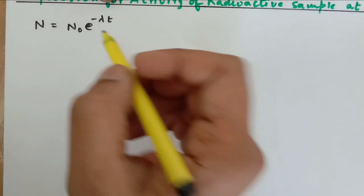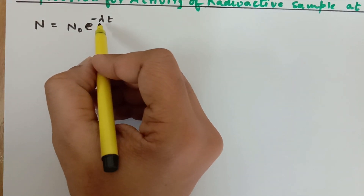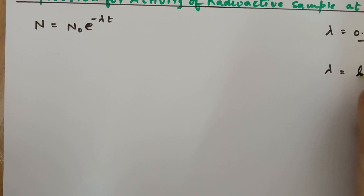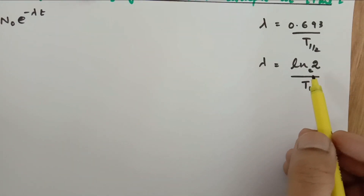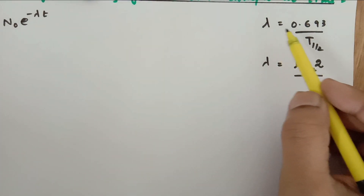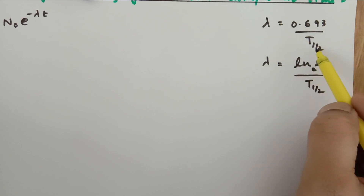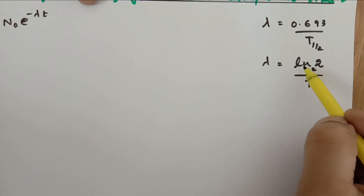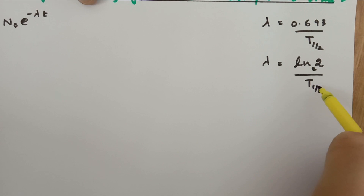For that we need to understand that lambda is the decay constant, and the decay constant lambda is equal to 0.693 upon t-half, which is the half-life time. We also know that 0.693 is equal to natural log 2, that is log to the base e, upon t-half.